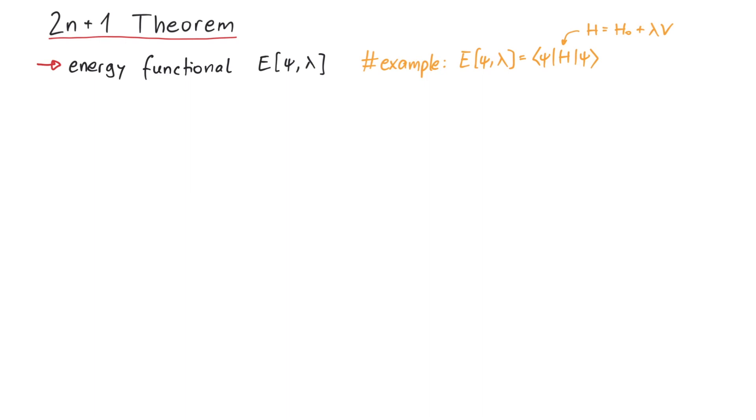How this function really looks like is not important for our discussion. We assume that if lambda is zero, the energy minimum is obtained by the function psi zero. But if we want to consider any lambda, we have to adjust psi zero with some delta psi. And we can calculate this delta psi for a given value of lambda by demanding that the derivative of the energy functional with respect to delta psi is zero.